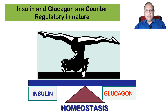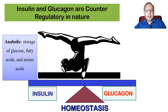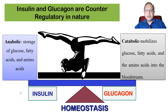The two major hormones released by the endocrine pancreas are insulin and glucagon, and they are counter-regulatory to each other. Insulin is anabolic — it helps in the storage of glucose, fatty acids, and amino acids. Glucagon, on the other hand, is catabolic — it mobilizes glucose, fatty acids, and amino acids into the bloodstream, causing an increase in blood glucose level, while insulin causes a decrease. A homeostasis is maintained by the fine regulation of insulin and glucagon, where somatostatin plays its role within the pancreas itself.